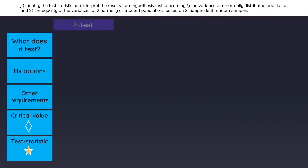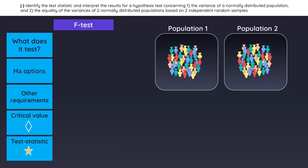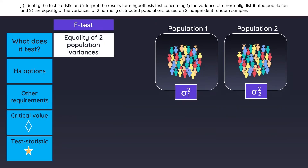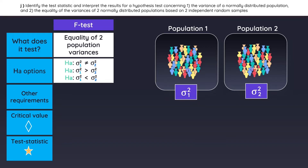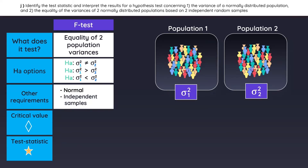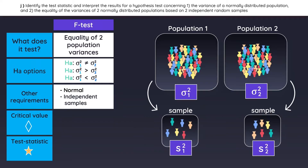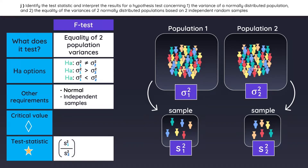The next test is the F-test, which is used when you have two populations and you want to make assumptions about the equality of their variances. These are the three possible alternative hypotheses — their variances could be equal, or one could be greater than the other. For this test, the population must be normally distributed, and the samples taken from each population must be independent. The test statistic is the ratio of the sample variances, and remember that the numerator is the larger of the two sample variances.